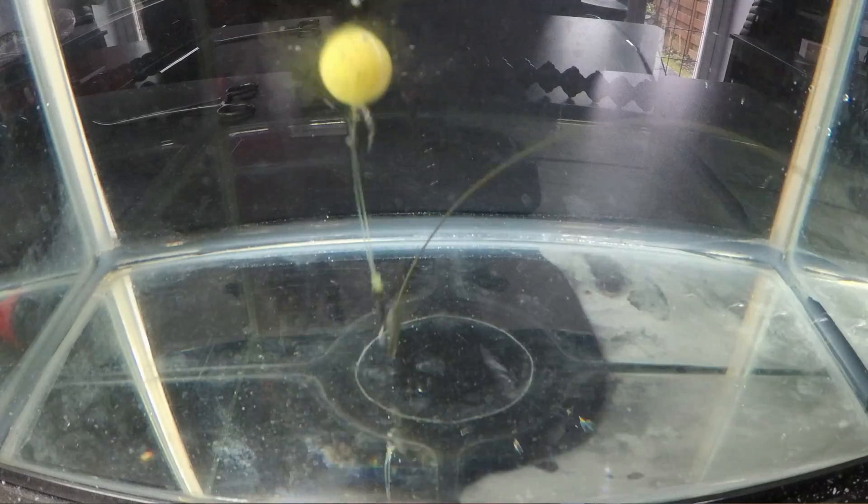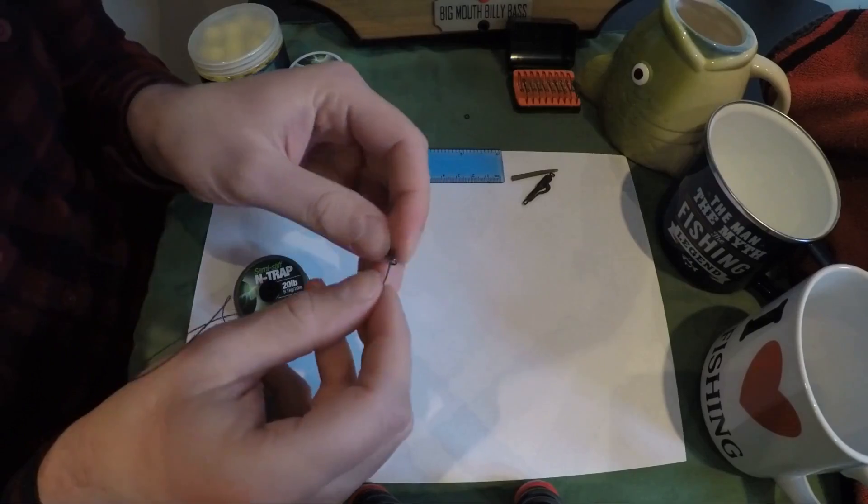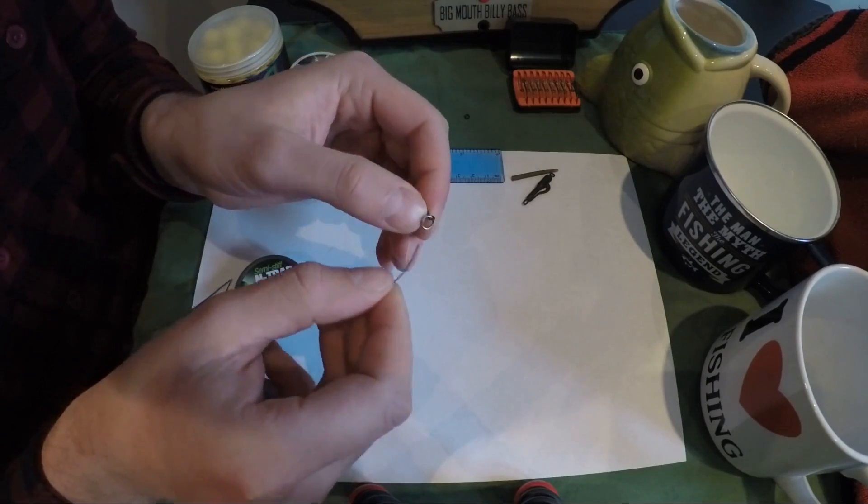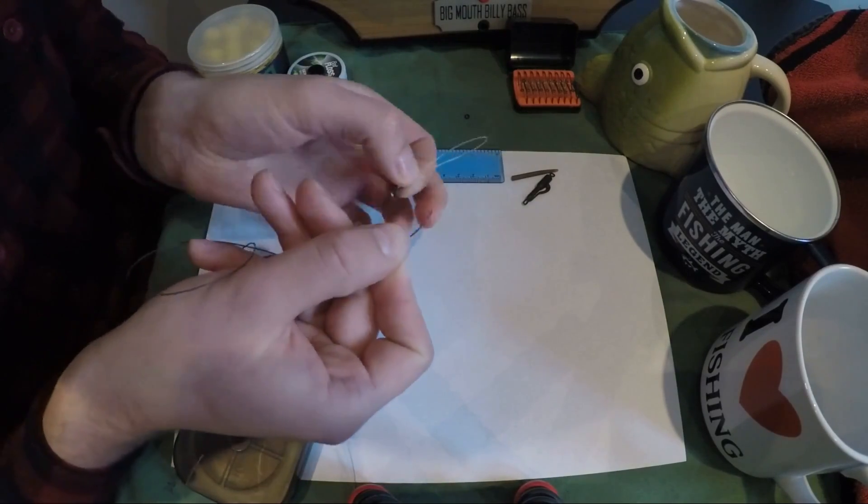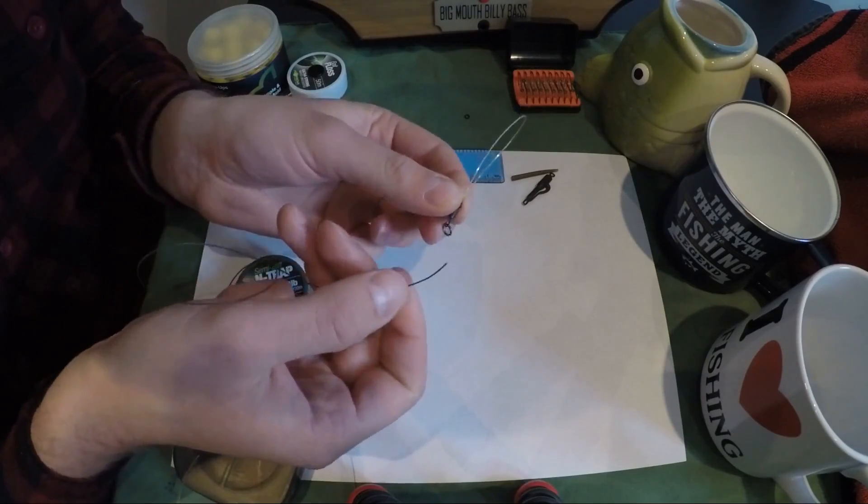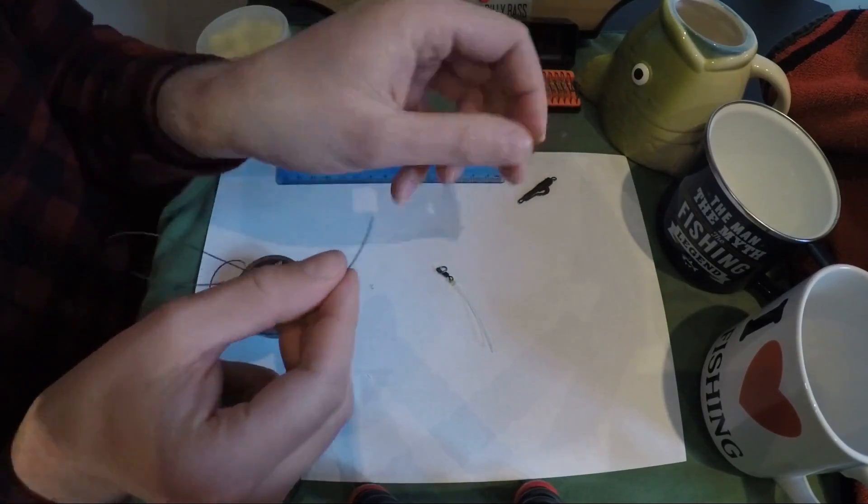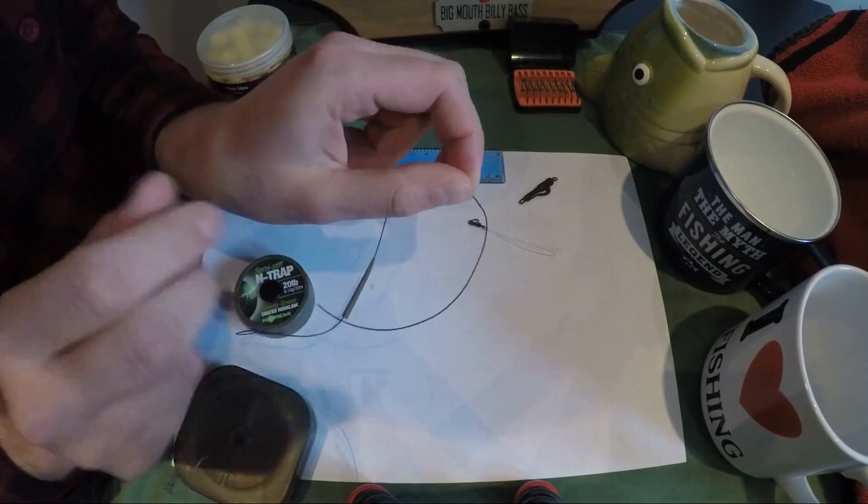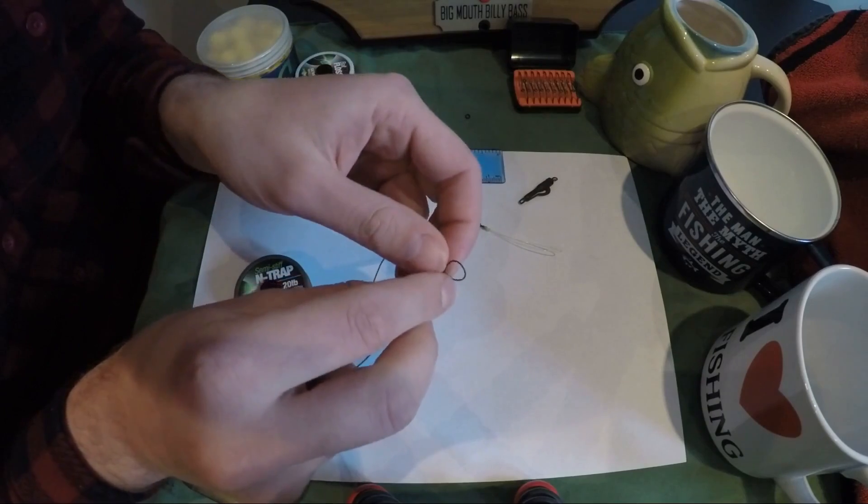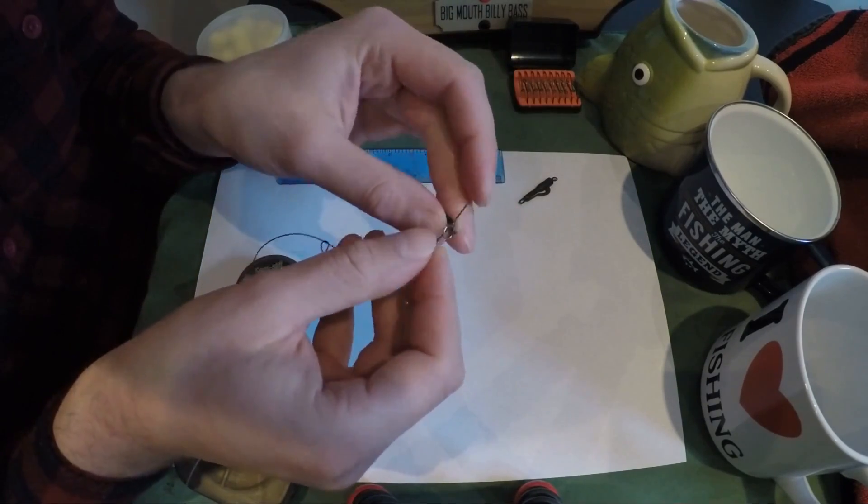For the boom section I use a semi-stiff coated braid and I like to attach the ring swivel with a loop knot. Problem is I've already tied that big loop there, so it'd be really hard to pass all of this back through a loop knot. I'll show you a little way to get around it. We're going to be using an anti-tangle sleeve later, so I thread that on first. What I'm going to do is, without tying the loop, just tie the figure of eight, put the hook link through the eye of the ring swivel.